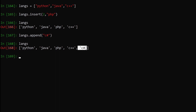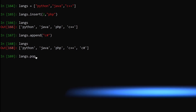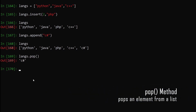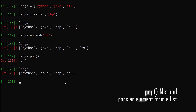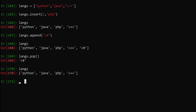Now let's say I want to pop out the last element from my list. I can say lengths.pop(). Hit enter — you can see we have popped out 'c sharp' from our original list. If I print out the list, you can see 'c sharp' doesn't exist in our list anymore.